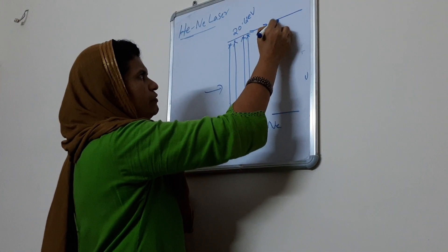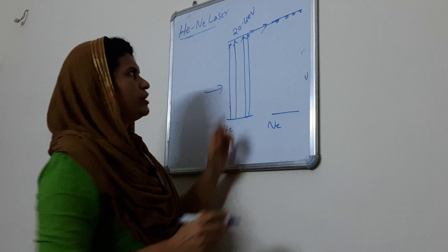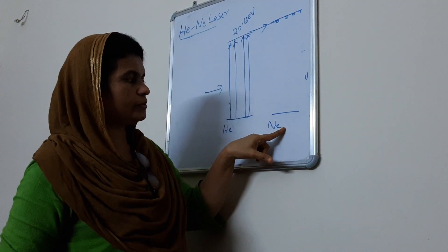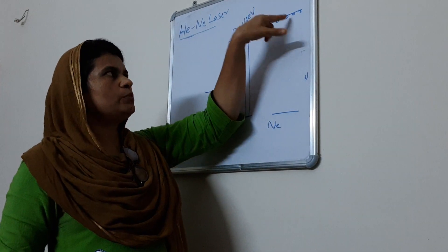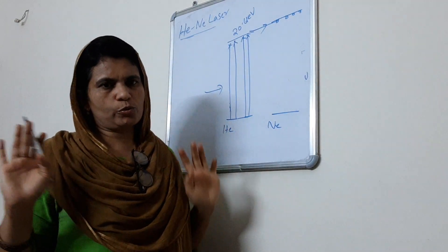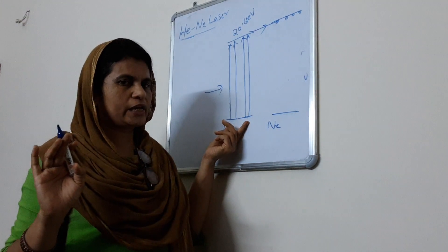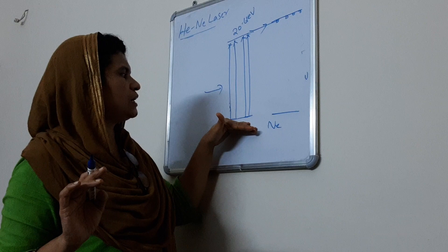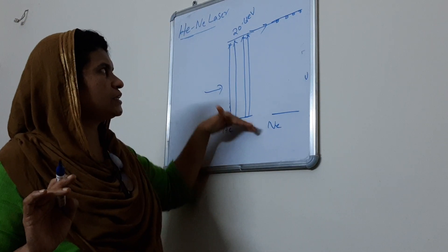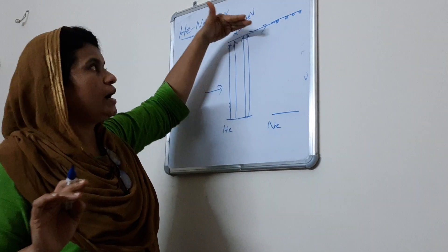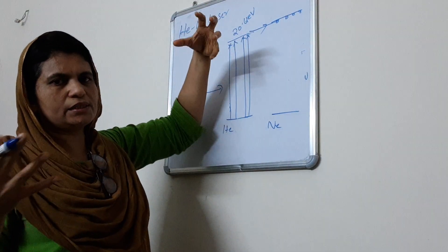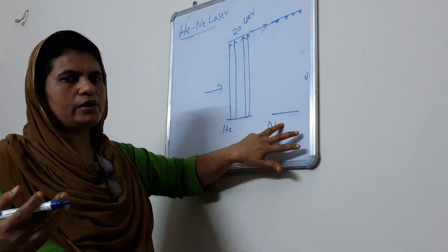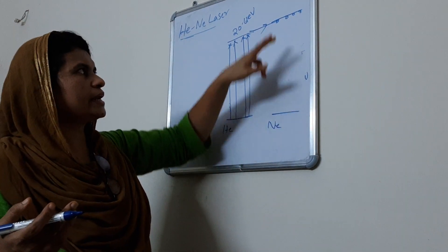The process of the neon particles are responsible to make neon particles come to the excited states. This is an optical pumping. The photons absorb. The ground state of the helium particles in the excited state. The excited state of the particles in the tube, they collide with the neon atoms and they get excited to higher level.